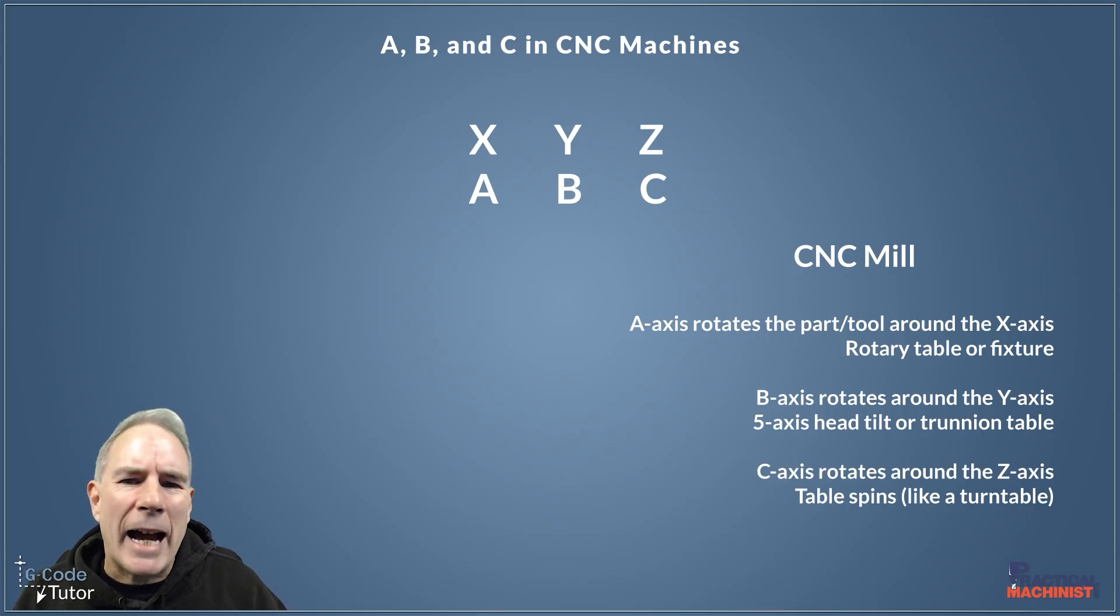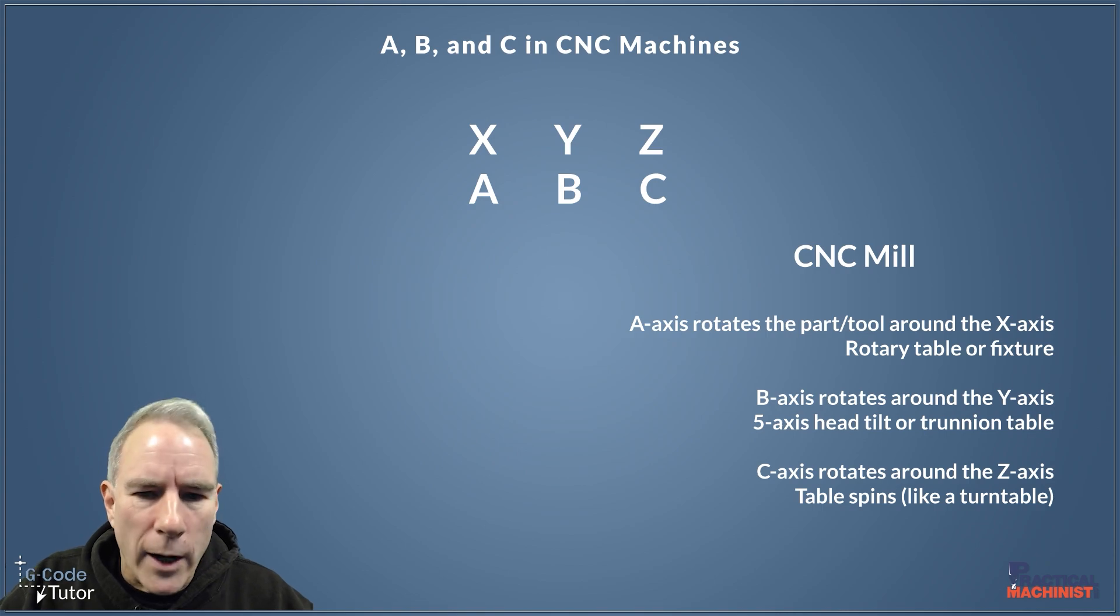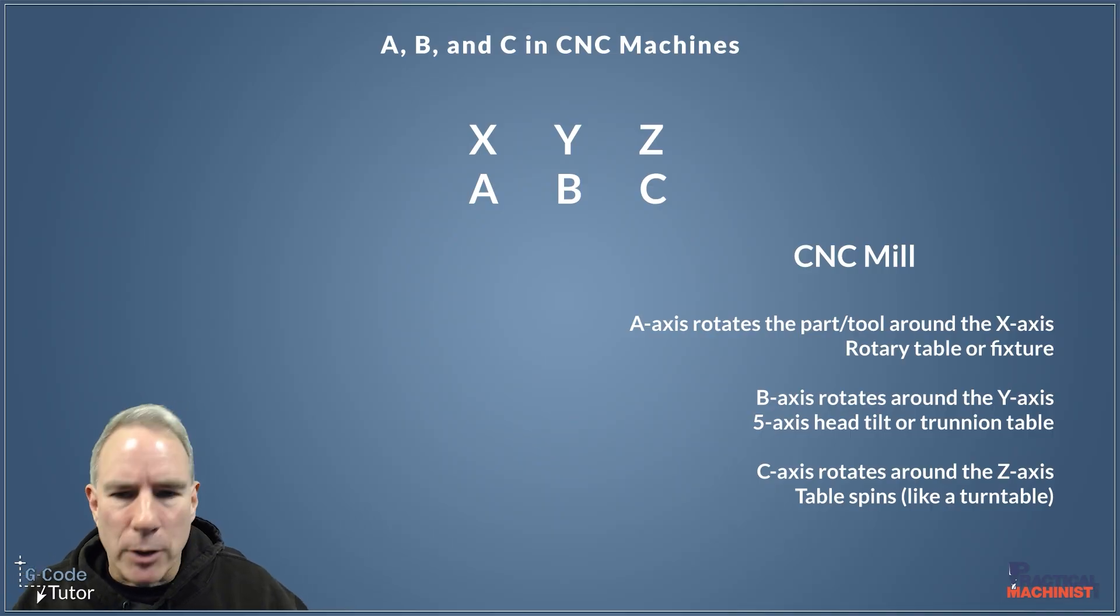On a horizontal mill, the B axis tends to be the rotary table that we might put the pallets on, etc., to rotate our billets. So the B axis on a milling machine controls the rotation around the Y axis there. And the C axis rotation is around the Z axis. So like a turntable, like the table would spin, then that would be the Z axis there.